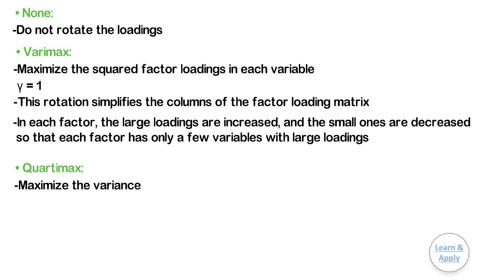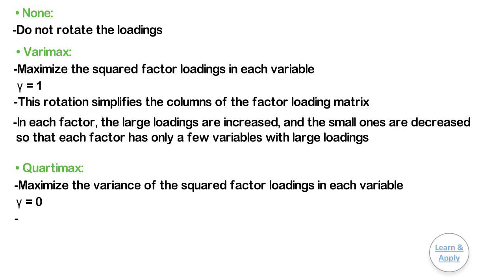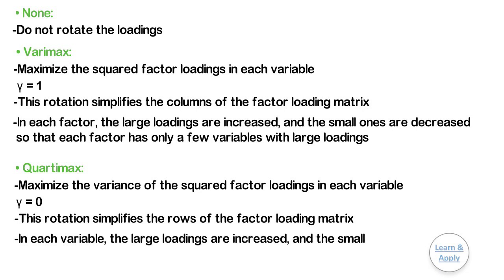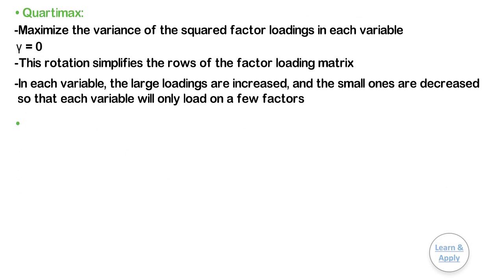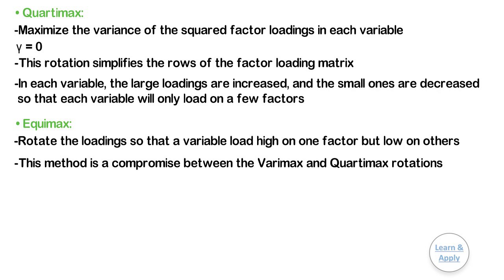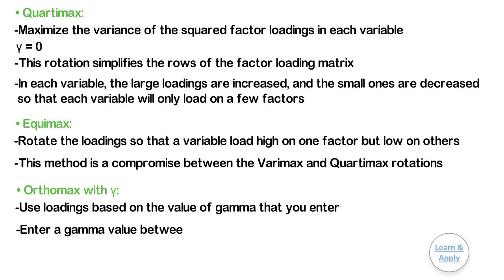Quartimax maximizes the variance of the squared factor loadings in each variable (Gamma = 0). This rotation simplifies the rows of the factor loading matrix so that each variable loads on only a few factors. Equimax rotates the loadings so that variables load high on one factor but low on the others; it is a compromise between Varimax and Quartimax. Orthomax with Gamma uses loadings based on the value of gamma that you enter, with a gamma value between 0 and 1.